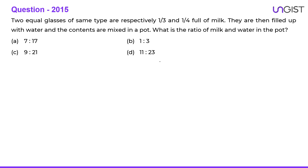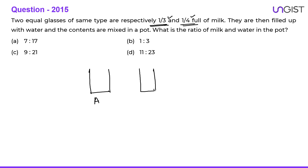The next question: two glasses of the same type are respectively one third and one fourth full of milk. So obviously the LCM of three and four will be taken as the capacity of the glass. Two glasses A and B — let us say their capacity is 12 liters, which is the LCM of three and four.